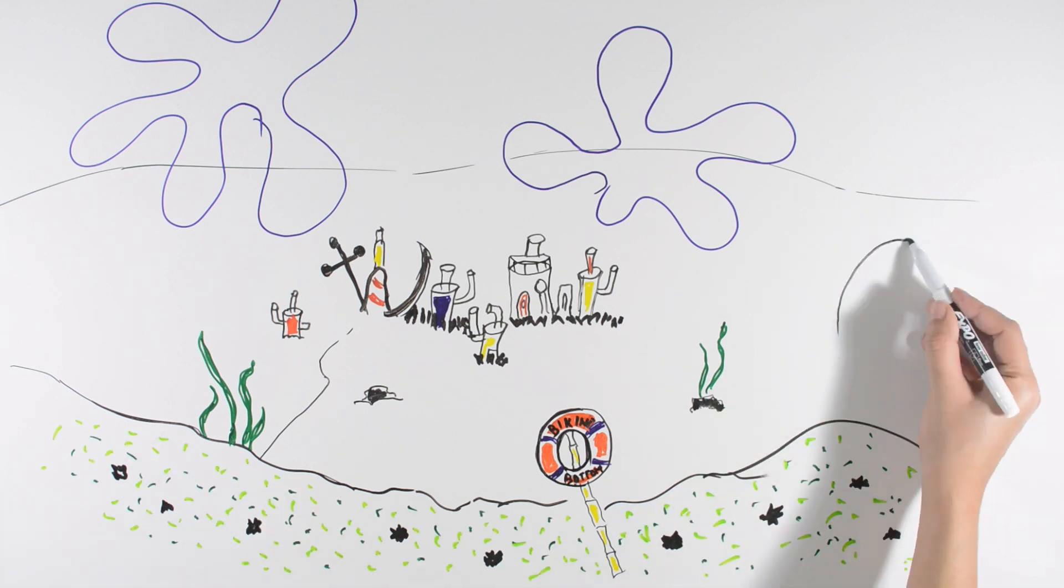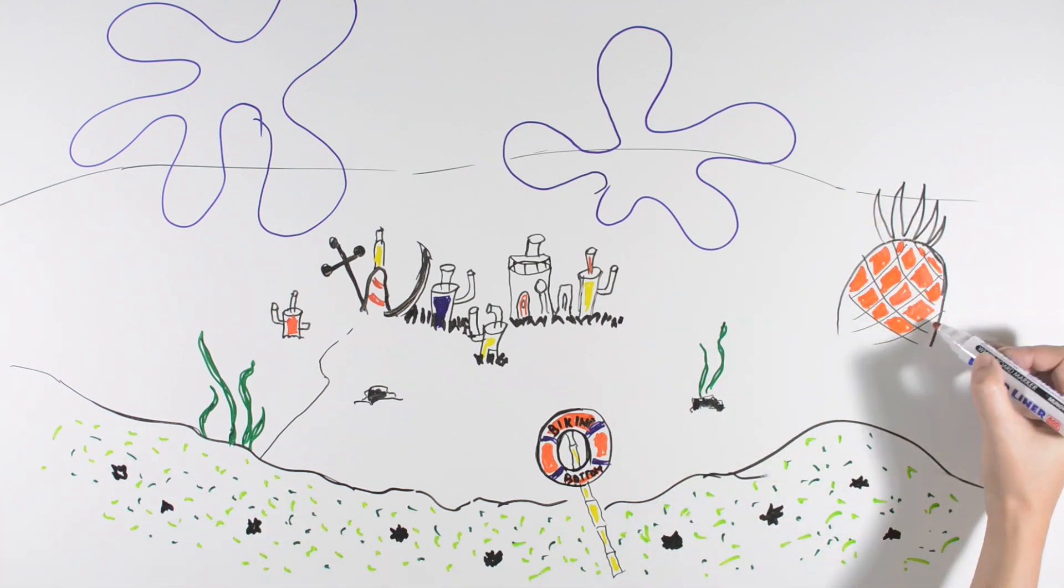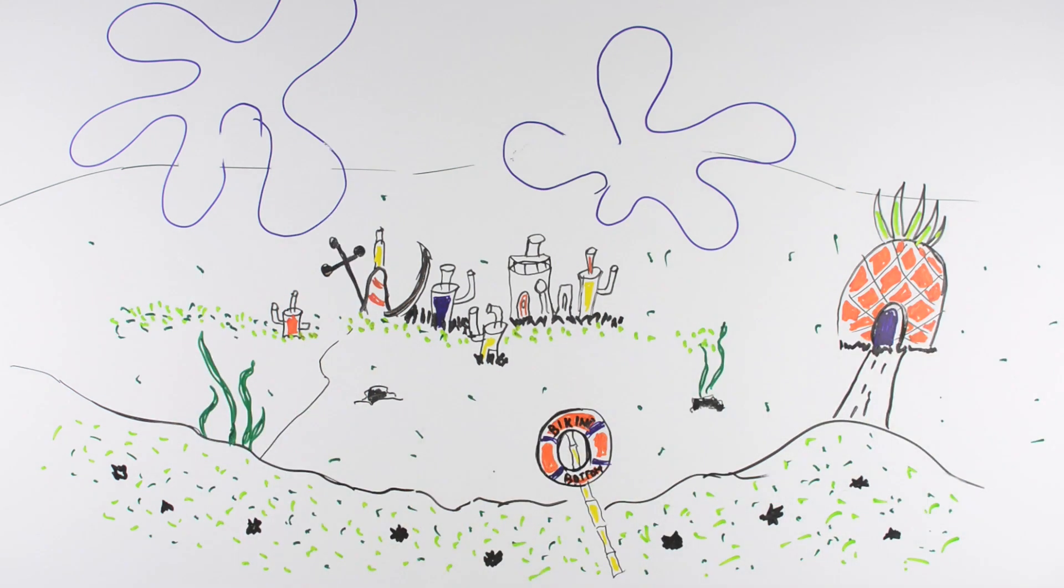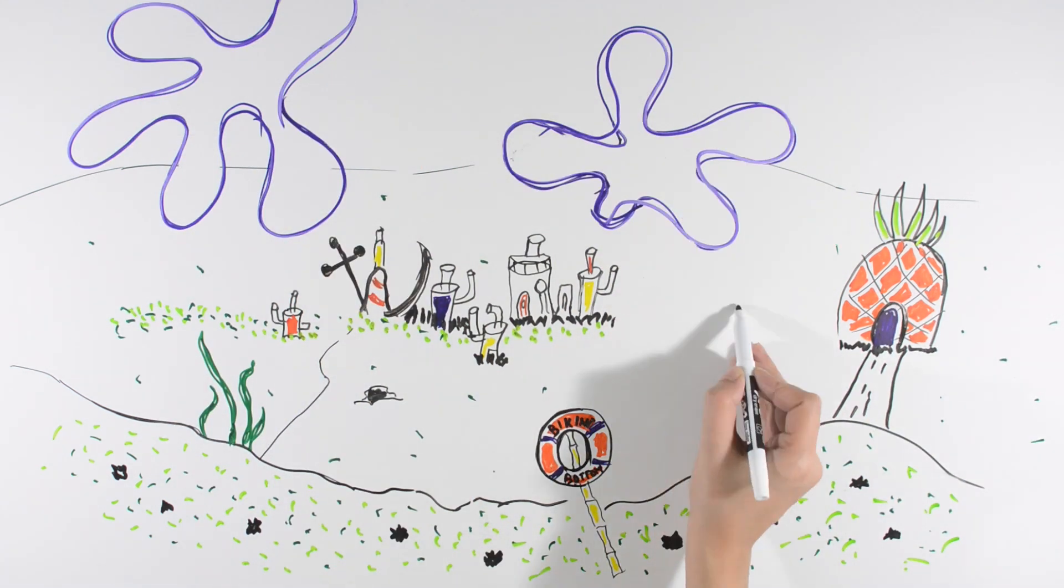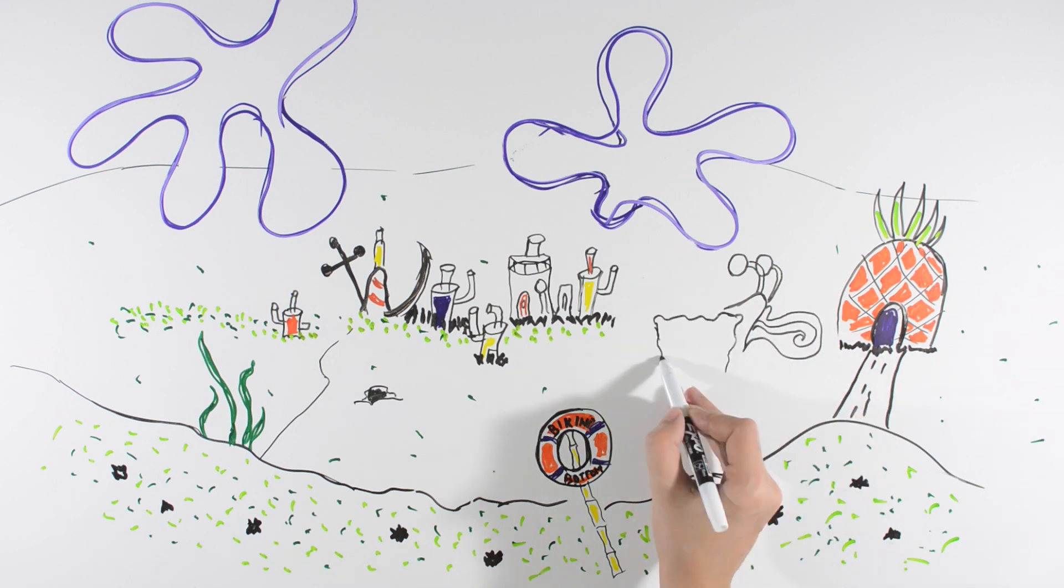SpongeBob SquarePants is an energetic and optimistic sea sponge. His physical appearance is like a rectangular kitchen sponge. He lives in a submerged pineapple house with his pet snail Gary, who meows like a cat. SpongeBob has a childlike enthusiasm for life.